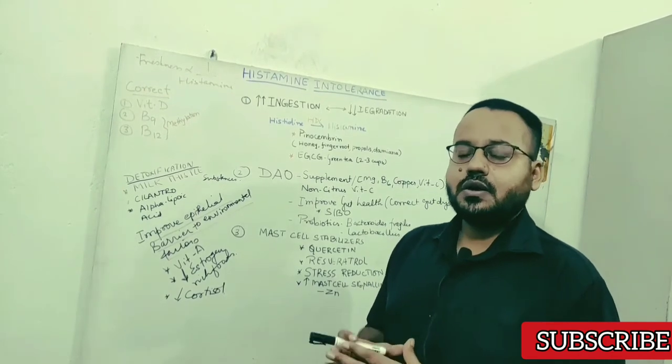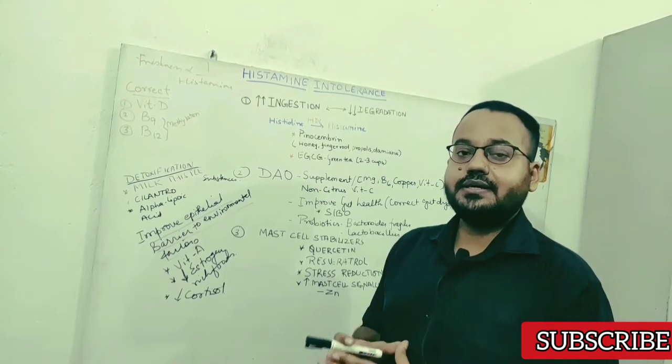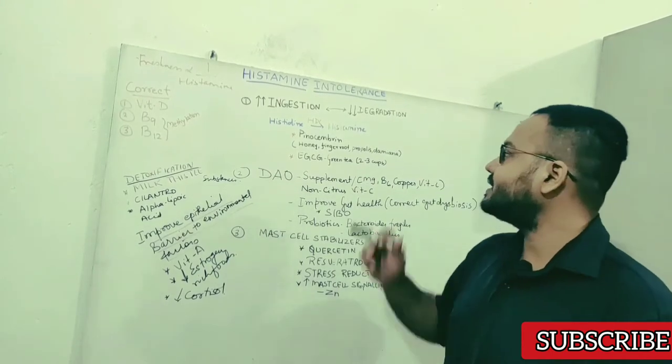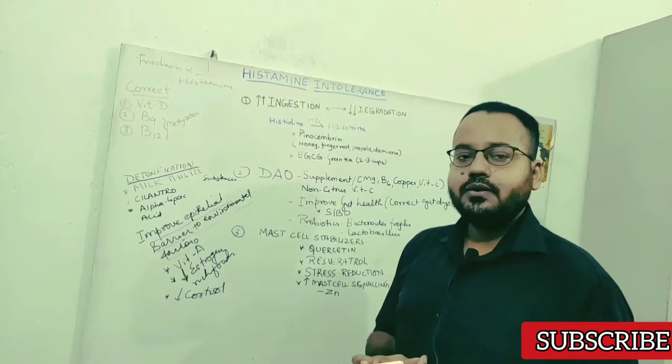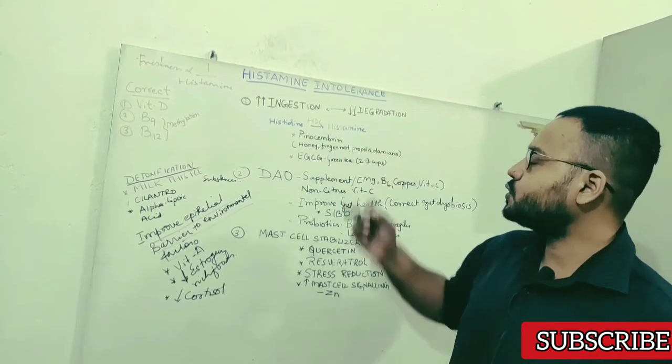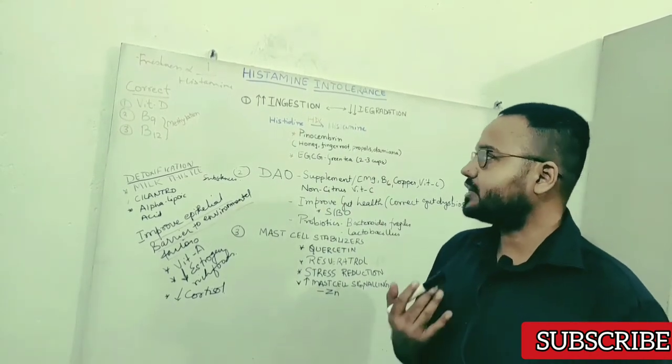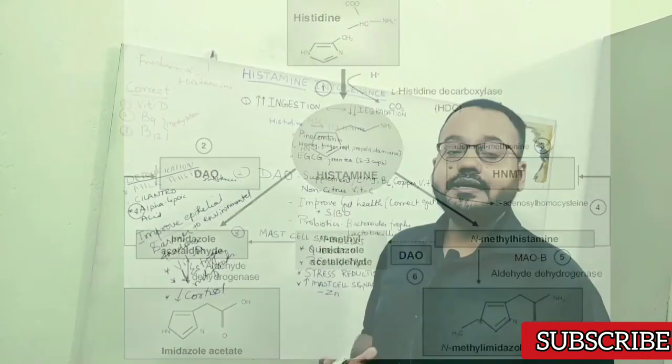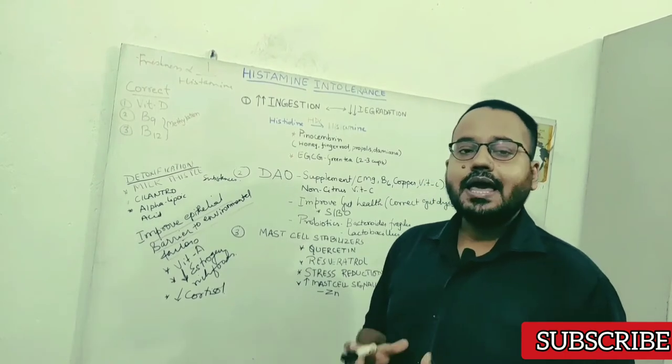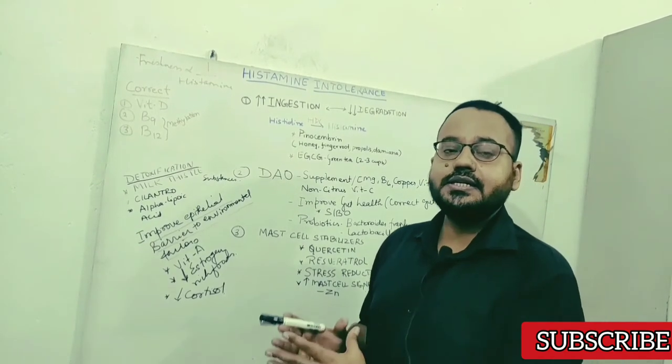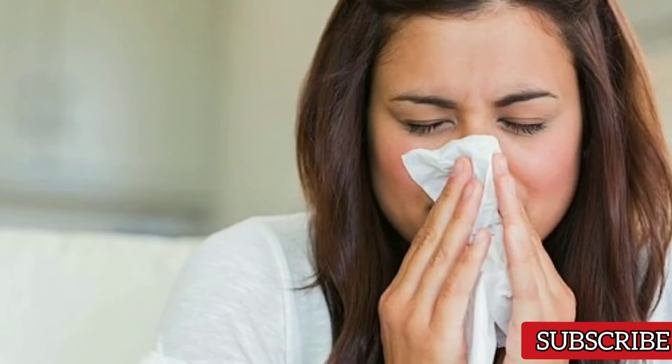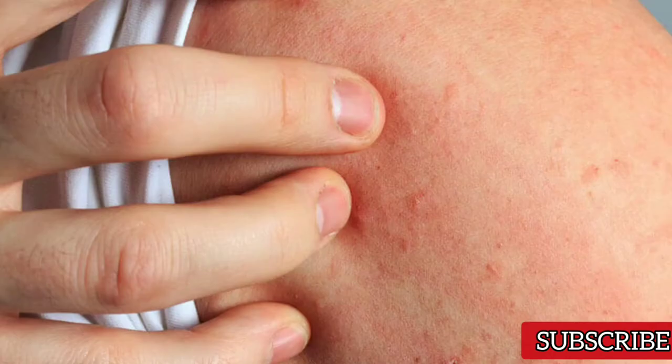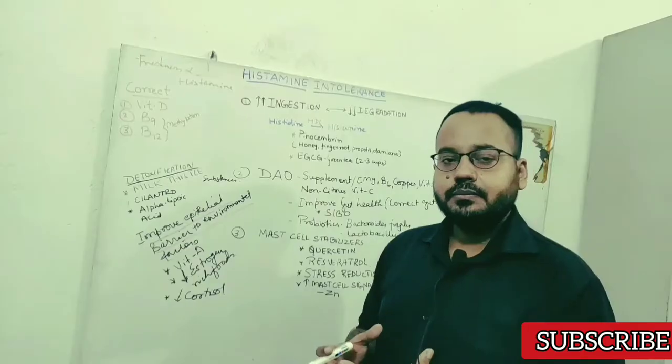Why is there histamine intolerance or rather overload? The main culprit here is decreased degradation of histamine. And when there is disequilibrium, when there is increased ingestion of histamine-rich food and decreased degradation of histamine, that can result in histamine overload. And then that can present as allergic symptoms like running nose, red eyes, migraine, headache, rashes and breathing difficulties.